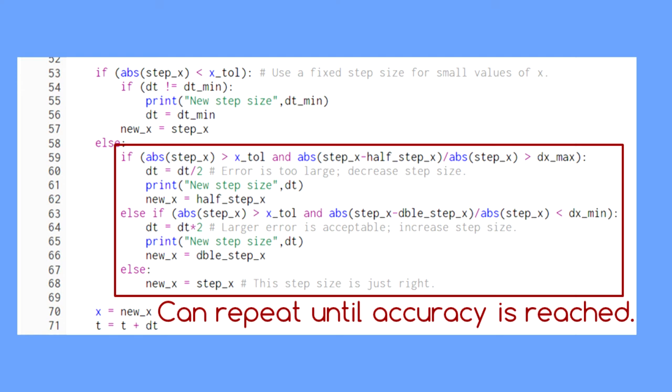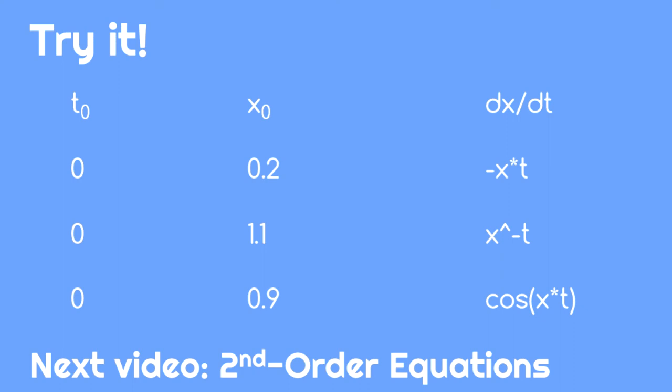You should now be able to implement the Runge-Kutta method with an adaptive step size for a given first order differential equation and a given set of initial conditions. Follow the link in the description below and modify the code to use the Runge-Kutta method to solve these differential equations and take note of where the step size increases and decreases.